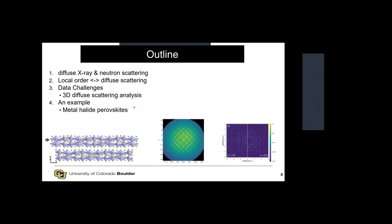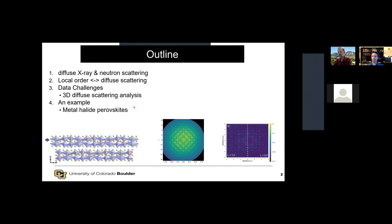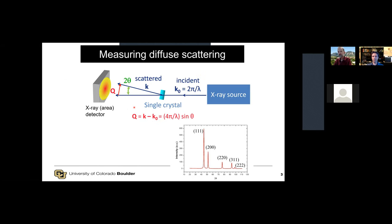Here's an outline. I'll explain what diffuse scattering is, since I expect that not many people on the talk know it. Then I'll relate this to what I think is an increased understanding that local order, which is not easily measured by X-ray diffraction, is increasingly recognized as a strong determinant of materials functionality. Since this is a data seminar, I'll talk about the challenges associated with this. And then I'll give a short example in terms of the metal halide perovskite work we've recently been doing. So first of all, what is diffuse scattering?